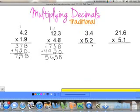Alright, 4 times 2 is 8. 3 times 2 is 6. Done with the 2. Use our 0 placeholder. 5 times 4 is 20. 5 times 3 is 15, plus 2 is 17.